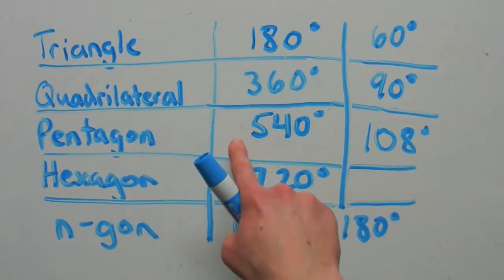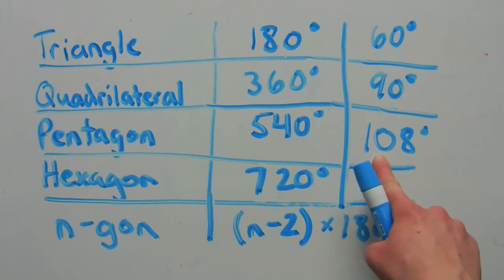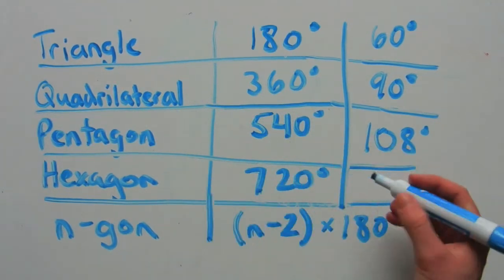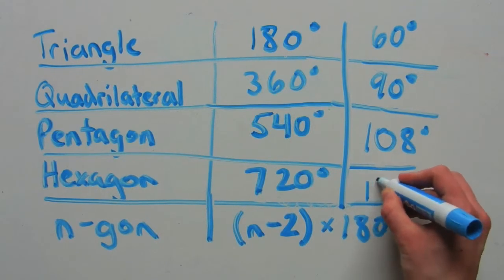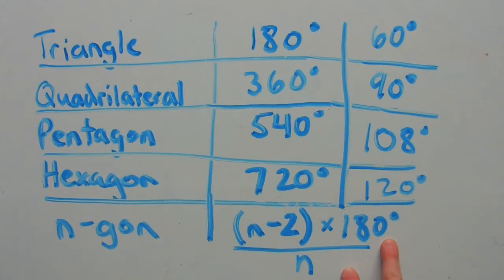So a regular pentagon would have five angles, each measuring 108 degrees. A hexagon, 720 divided by six, would be 120 degrees. And so on. So to find the individual angle measure for an n-gon, knowing that it's regular, you would just divide this formula by n. And that would help you calculate the individual angle.